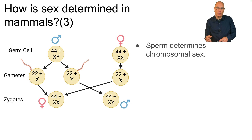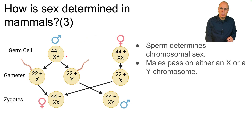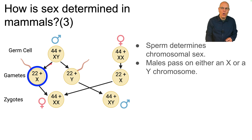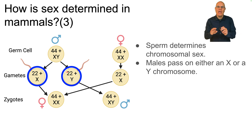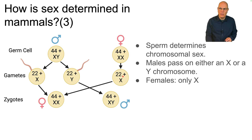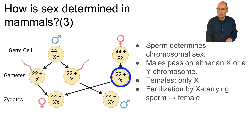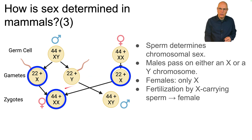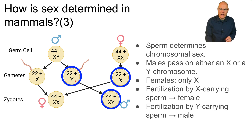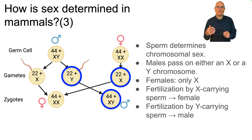The SRY region later drives production of testosterone, which differentiates the body into its male form. During fertilization, it's the sperm that determines the chromosomal sex of the zygote, which becomes the embryo, which becomes the baby, which becomes the person. Males have 22 autosomes plus an X and a Y chromosome. During meiosis, they pass on either an X or a Y chromosome — even though X and Y aren't truly homologous, they still get separated just like other homologous pairs. Every egg cell carries an X chromosome. If the egg is fertilized by an X-carrying sperm, the zygote will have two X chromosomes and develop into a female. If fertilized by a Y-carrying sperm, the zygote will be XY and develop into a male.